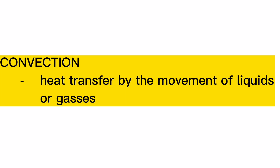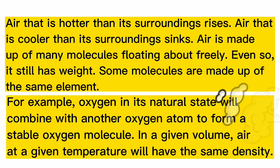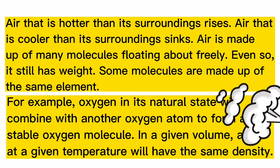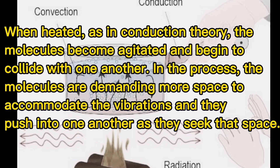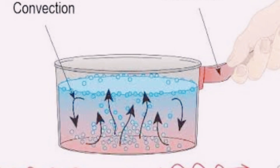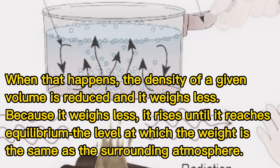Convection — heat transfer by the movement of liquids or gases. Air that is hotter than its surroundings rises; air that is cooler than its surroundings sinks. Air is made up of many molecules floating about freely, and it still has weight. Some molecules are made up of the same element — for example, oxygen in its natural state will combine with another oxygen atom to form a stable oxygen molecule. In a given volume, air at a given temperature will have the same density. When heated, as in conduction theory, the molecules become agitated and begin to collide with one another. In the process, the molecules demand more space to accommodate the vibrations and push into one another as they seek that space. When that happens, the density of a given volume is reduced and it weighs less, so it rises until it reaches equilibrium — the level at which the weight is the same as the surrounding atmosphere.